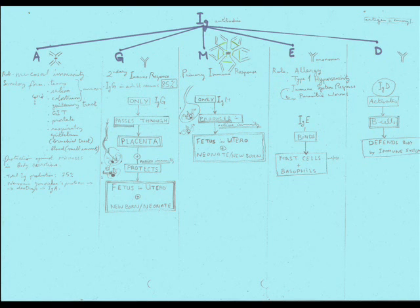Now, let's talk about the function of IgA, the role of IgA. The role of IgA is mucosal immunity. That's the main role. How and where is it found? It is found in secretory form. You can find it in tears, saliva, colostrum - as I told you last time, it means breast milk. Genitourinary tract, GIT, gastrointestinal tract, prostate, respiratory epithelium, which is in the bronchial tract, and in blood.